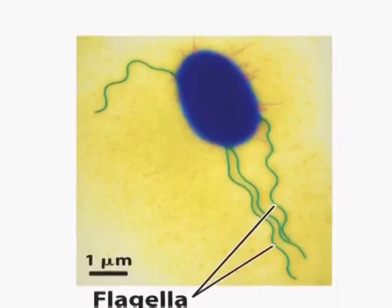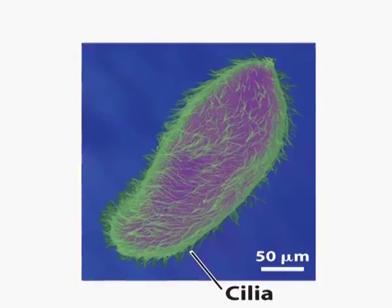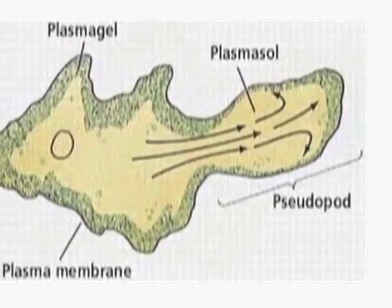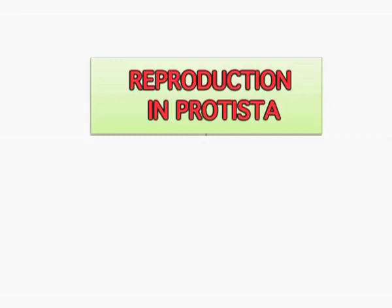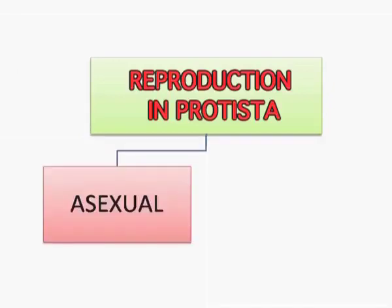Locomotion in these protistans is either by flagella, cilia, or pseudopodia. Reproduction is either asexual or sexual. Just like the Monerans, they too have a diversified nutritional mode. They can either be autotrophic, saprophytic, parasitic, or they can feed on other organisms.